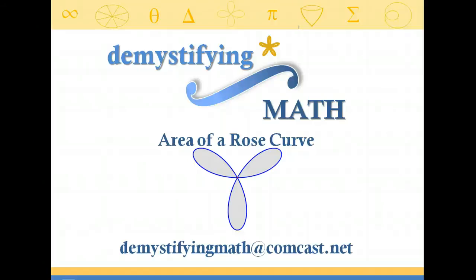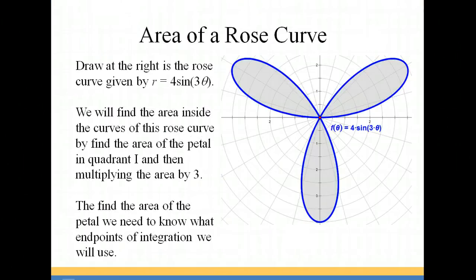Welcome to Demystifying Math. In this lesson, we're going to be finding the area of a rose curve. Specifically, we're going to find the area of the petals of the rose curve of r equals 4 sine 3 theta.